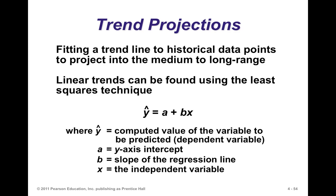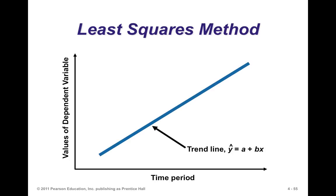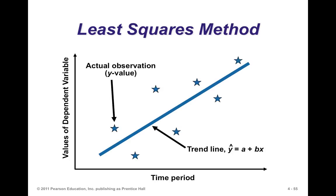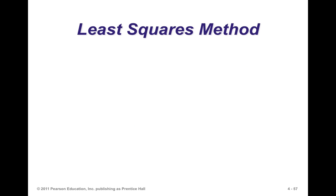Trend projections should bring you back to statistics — essentially a linear relationship between two variables. Because we're talking about time series data, the relationship is between time and the predicted variable. X here represents the independent variable, which is time. Fitting a trend model in Excel by plotting the data, Excel can fit a trend line quite easily. All you need is the least squares method, which finds a line with the least error in its estimates. When you use it for predictions, the line actually minimizes the mean squared error — MSE — hence we call it the least squares method.